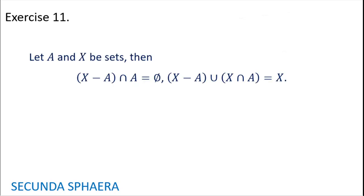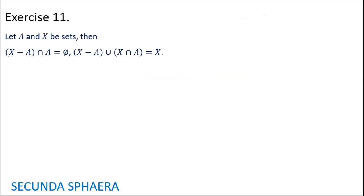Starting with exercise 11: let A and X be sets. Then X without A intersection A is equal to the empty set, and X without A union X intersection A is equal to X. If you want to try this exercise on your own, feel free. Otherwise, continue watching. For the proof, the first part is an equality of sets and it is going to be proven by equivalences.